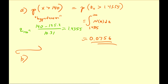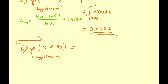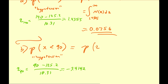Let's assume we're interested in the probability that x is going to be less than 90. This is what we call hypotension — low blood pressure. What's the probability that we select a random female and their blood pressure is less than 90? The z-score for 90 is that value minus the mean divided by the standard deviation, which is approximately negative 3.4142. We can already see this z-score is farther from the mean than the hypertension cutoff, so the likelihood of hypotension will be lower.